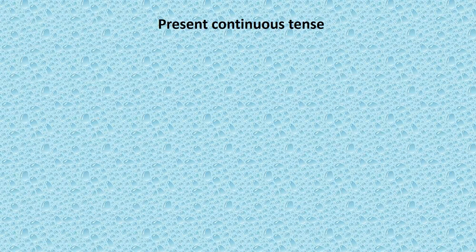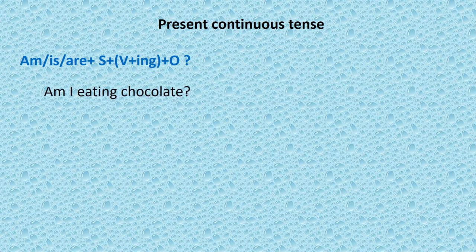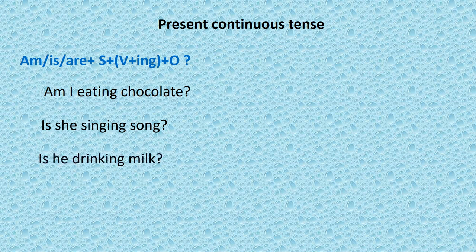Now the question type one sentence. It starts with am/is/are + subject + verb with -ing + object. Am I eating chocolate? Is she singing song? क्या वो गाना गा रही है? Is she drinking milk? क्या वो दूध पी रहा है? Are they reading book? क्या वे किताब पढ़ रहे हैं?